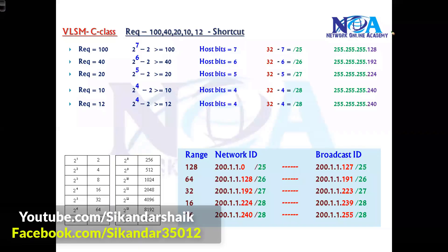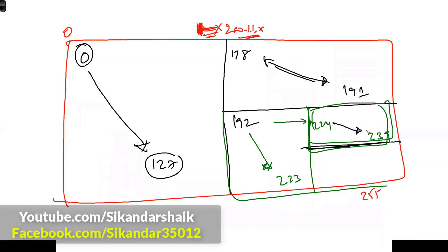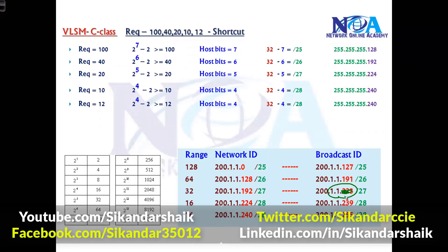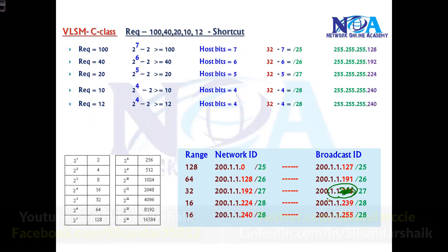Note: the range for the 20-host subnet actually ends on 223, not 207 as written earlier. That was a mistake — the correct value is 223.